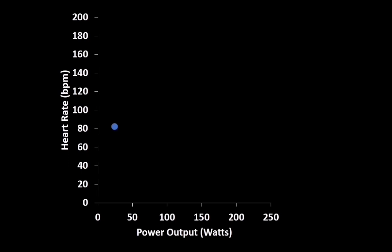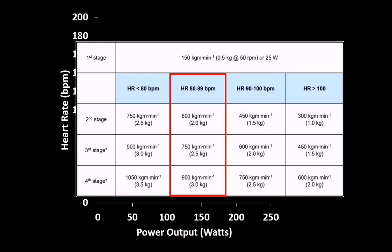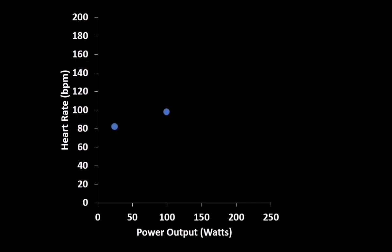Using the chart we now know which protocol to choose, which tells us to increase the total load on the bike to two kilopounds. Her heart rate rises to 98 beats per minute by the end of stage two. We add another half kilo for stage three and her heart rate increases to 137.